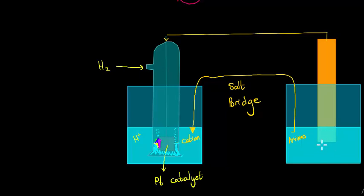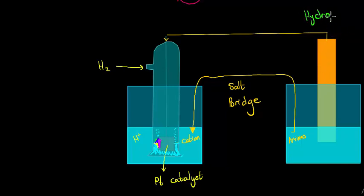It all depends on which of the two electrodes has the strongest pull on electrons. If we set up both sides as identical hydrogen half cells, we would have absolutely no electrons flowing. There's no potential difference between them.